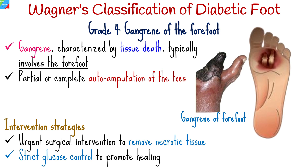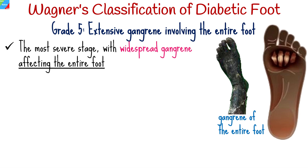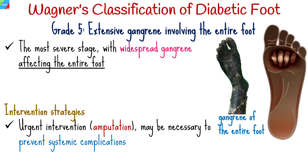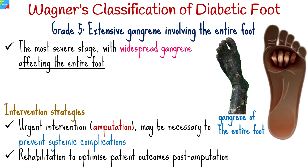Grade 5: The most severe stage, this grade signifies widespread gangrene affecting the entire foot. Urgent intervention, such as amputation, may be necessary to prevent systemic complications. Collaboration with rehabilitation services to optimize patient outcomes post-amputation is essential.